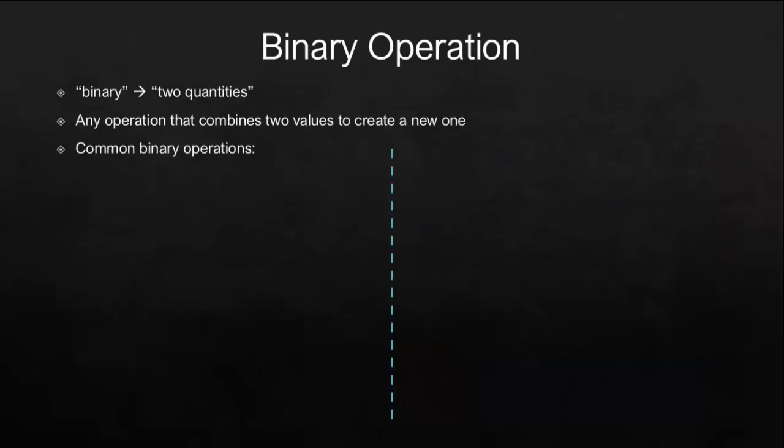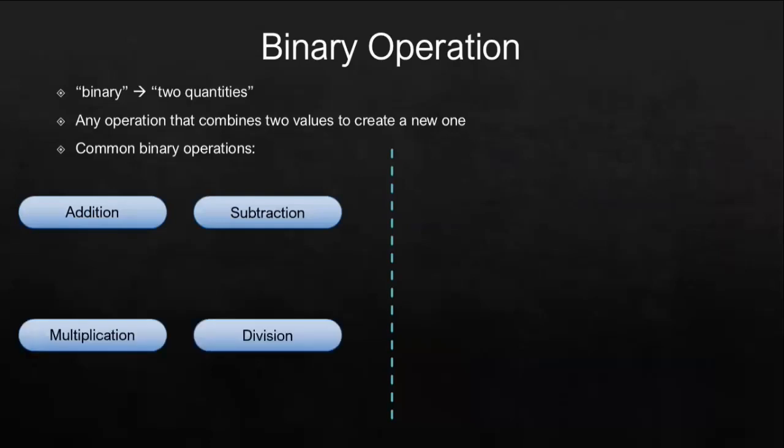The most common binary operations are the four basic operations which are addition, subtraction, multiplication, and division. All of them combine two numbers in order to create a new value.